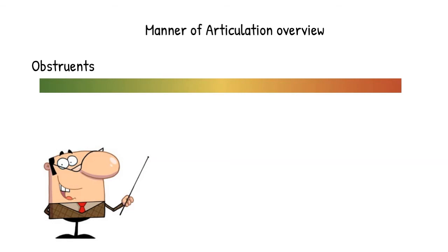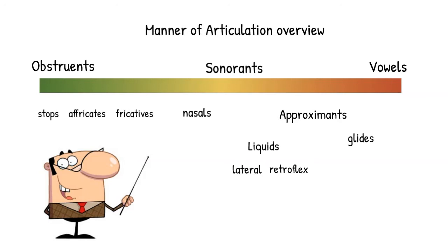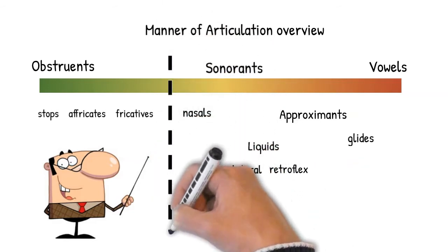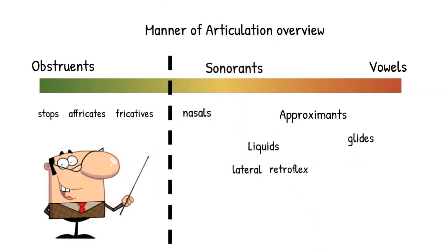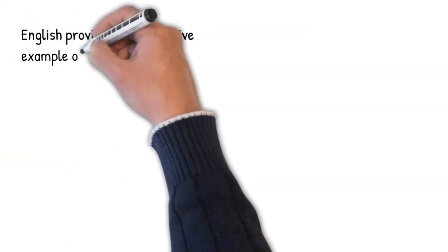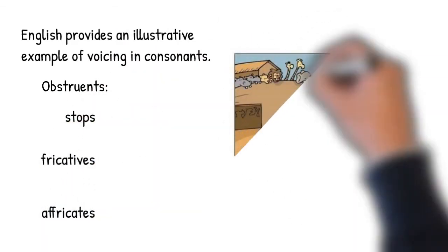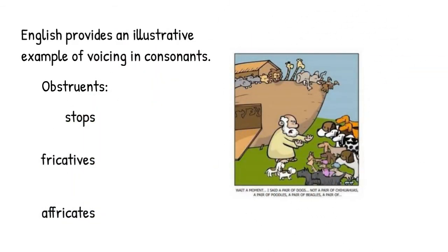So what consonants are voiced and what consonants are voiceless? It's maybe helpful to return to the continuum we saw in our presentation on manner of articulation and sonorant consonants. In particular, let's look at the distinction between obstruents and sonorants. English provides a really useful example of voicing in consonants.